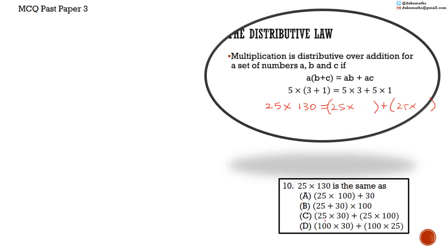C. C is the answer. 25 multiplied by 30 plus 25 multiplied by 100 with 100 plus 30 adding up to 130.